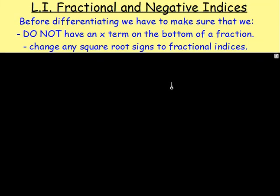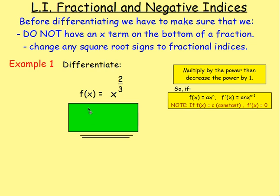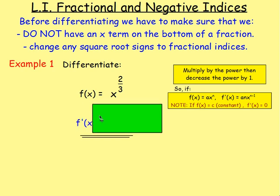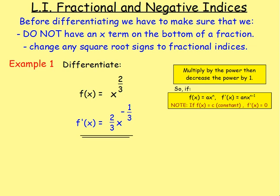Let's look at some examples. Example number 1: differentiate f(x) = x to the power of 2 thirds. Is x on the bottom of a fraction? No. Are there square roots? No. So you can differentiate. Differentiating f(x) gives you f'(x). Multiply by the power and decrease the power by 1. The power is 2 over 3, so we bring that to the front: 2 over 3 times 1x. Then subtracting 1 from 2 thirds: 2 take away 3 is negative 1, so the new power is negative 1 third.